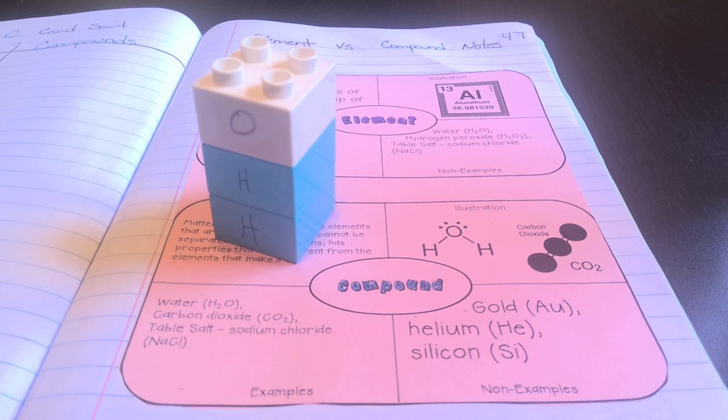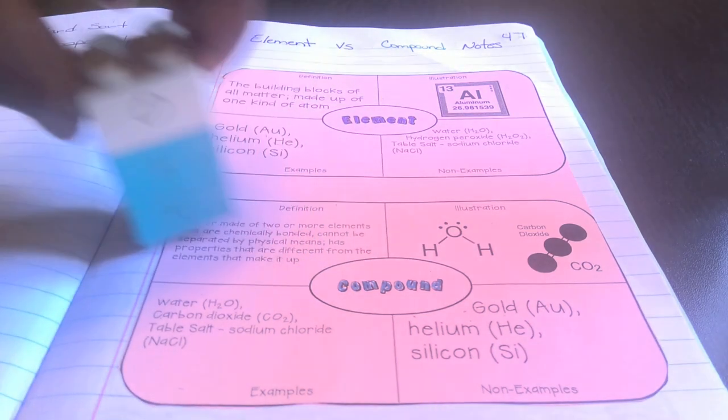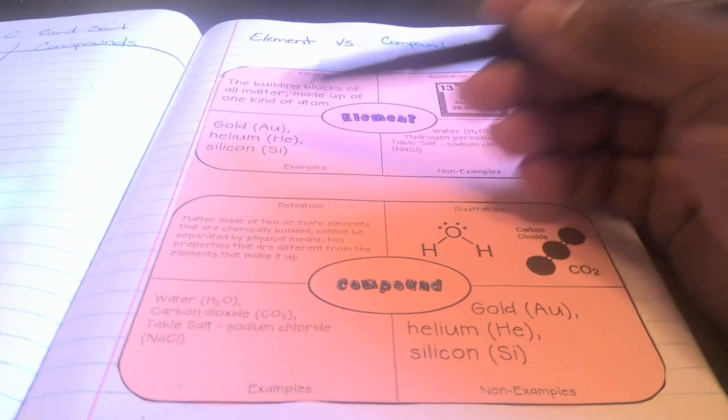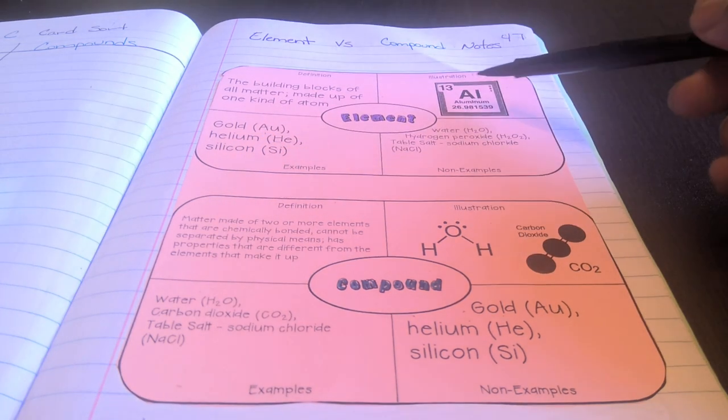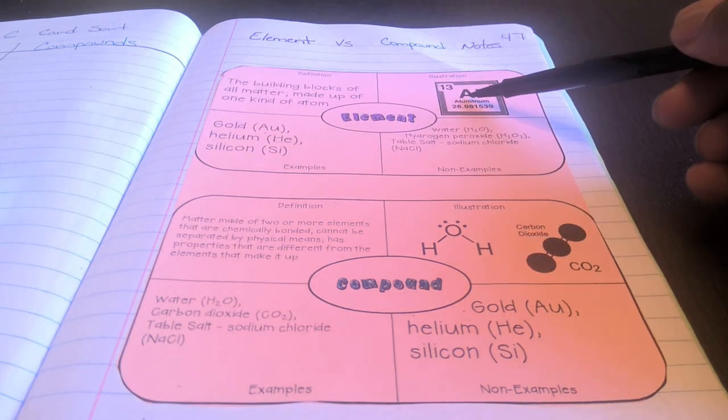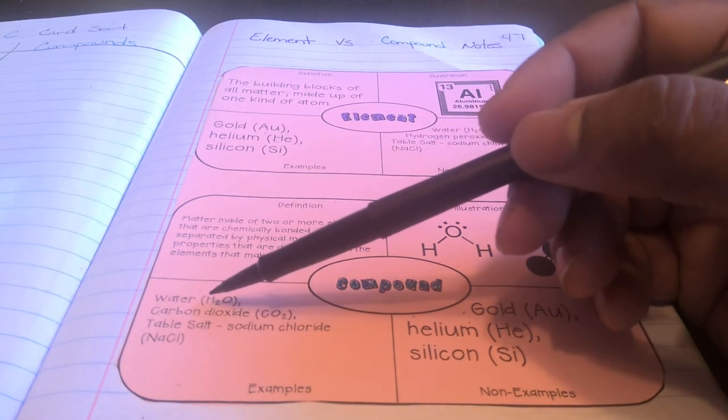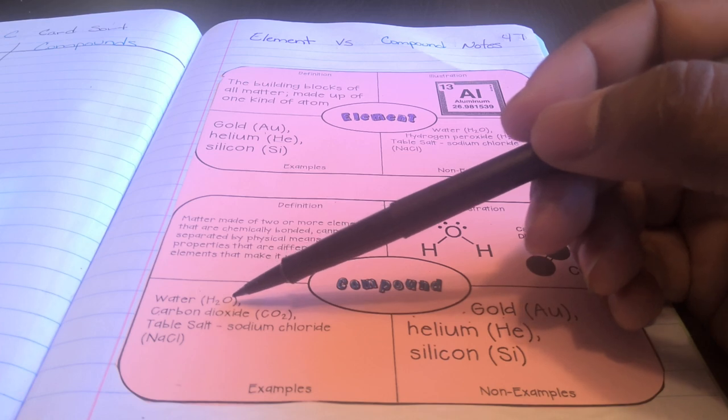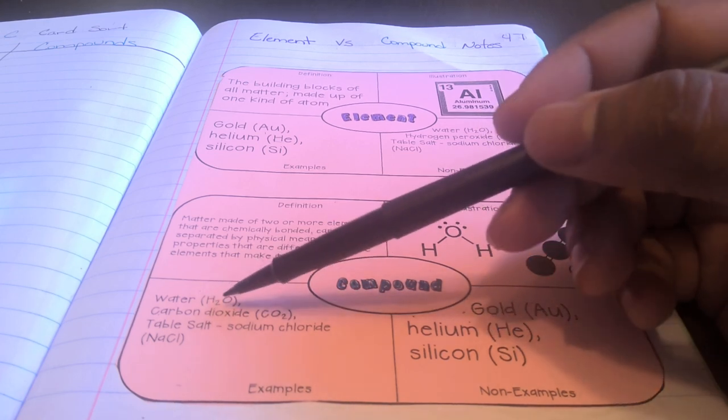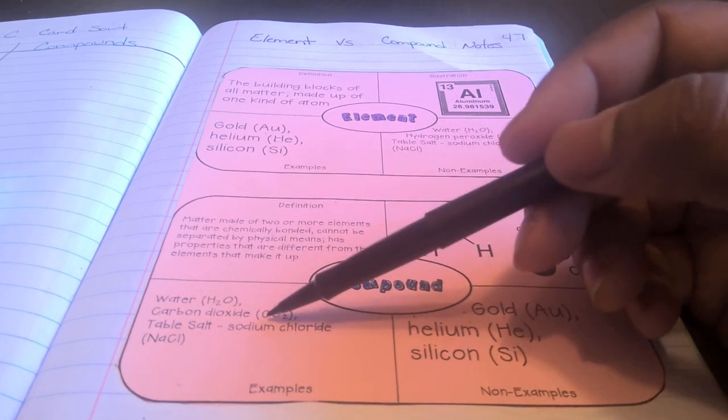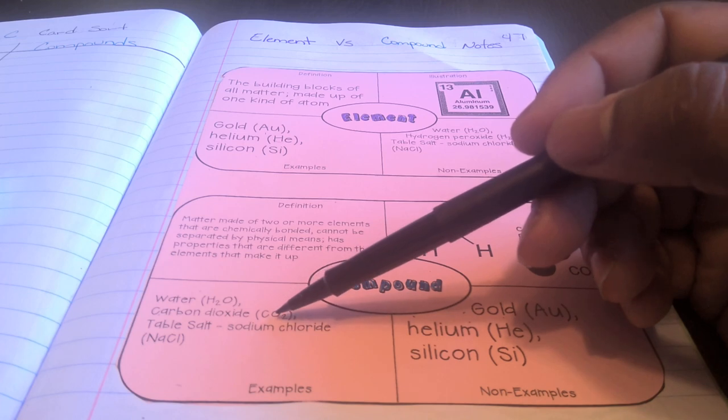To help us determine if we are looking at an element or a compound, we can count the number of capital letters in the formula. So if we look up here in gold, this is an element. There's only one capital letter. Aluminum, there's only one capital letter. But if we come down here to the compounds, you can see there's a capital H and a capital O. So this tells me this is a compound because there are two or more capital letters. Same thing with carbon dioxide. We have a capital C and a capital O.